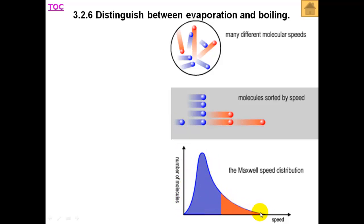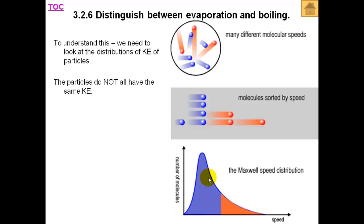In any liquid there will be some particles moving very slowly and some particles moving very quickly, but on average it will be somewhere in the middle. If these are the average speeds, it will also give us the kinetic energies, since the kinetic energy is half MV squared. So these particles do not all have the same kinetic energy.